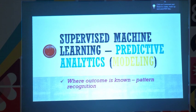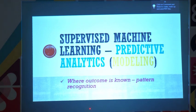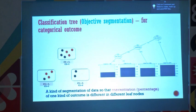This is the piece that when people say 'predictive analytics', they refer to. When people say 'modeling', most often they also refer to this piece — where the outcome is known and the algorithm performs pattern recognition. Let me quickly talk about two or three algorithms that can do this kind of job. One of the tools is called the classification tree.